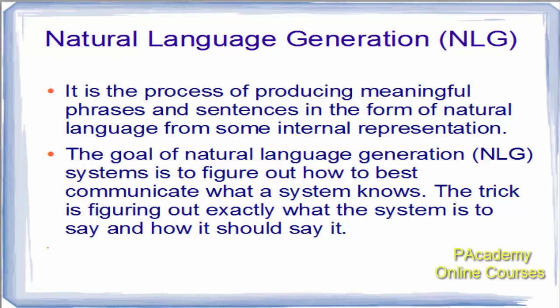The next component is natural language generation. It is the process of producing meaningful phrases and sentences in the form of natural language from some internal representation. The goal of a natural language generation system is to figure out how to best communicate what a system knows — figuring out exactly what the system is to say and how it would say it.